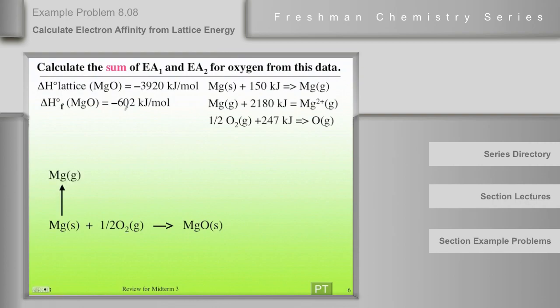Then we'll go through the alternate reaction. First of all, we'll make magnesium in the gas phase. And in this problem it takes 150. In the last one it took 148, but they're pretty close together.